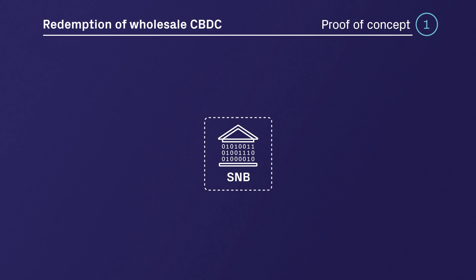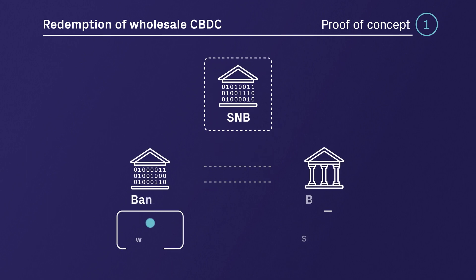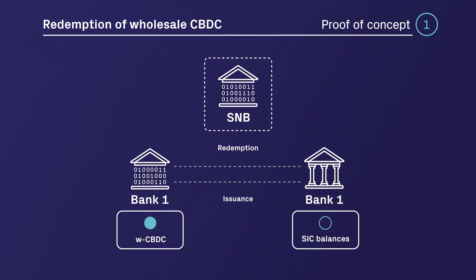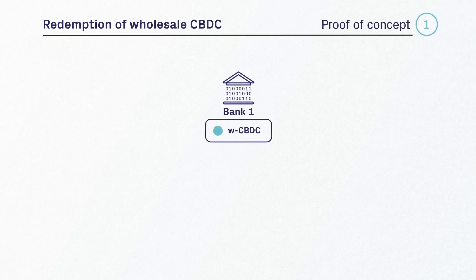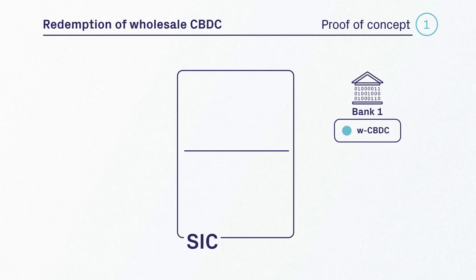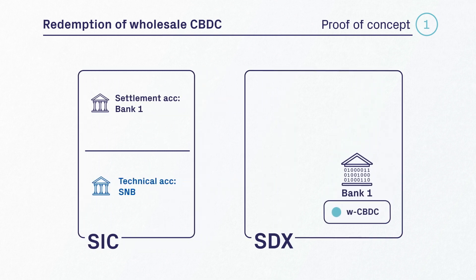The node of the Swiss National Bank is involved in the redemption transaction, as only the central bank can issue and redeem wholesale CBDC. In this example, bank one wants to redeem an amount of wholesale CBDC. On the SIC platform we have a settlement account for bank one and a technical account for SNB. On the SDX platform we have the node of bank one, the SNB node, and the notary node.